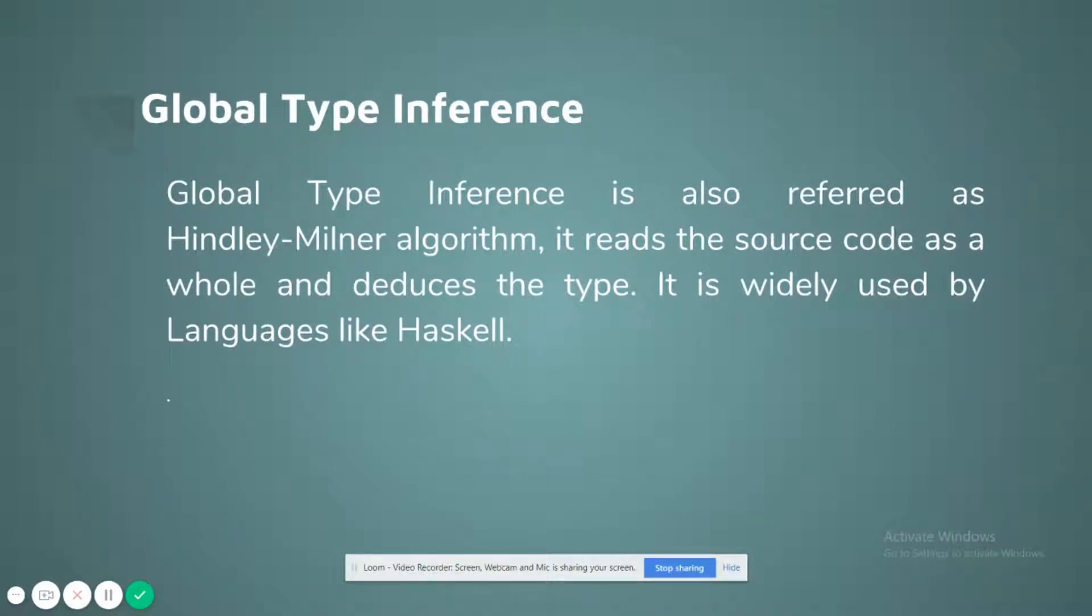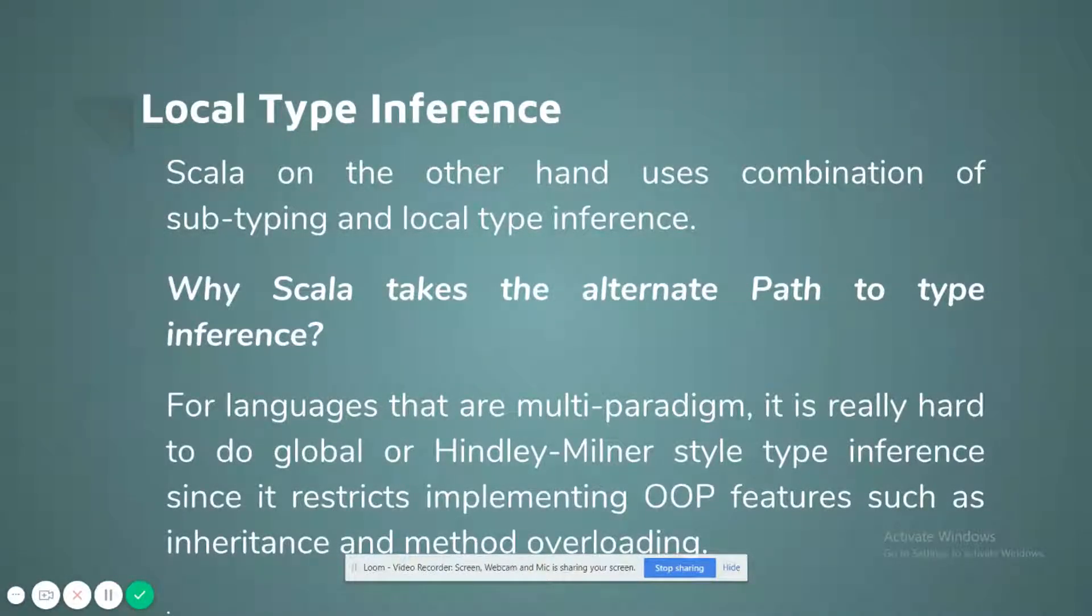In global type inference, often an algorithm called the Hindley-Milner is used to deduce the types. The Hindley-Milner algorithm is also called global type inference. In this algorithm, it reads the source code as a whole and deduces the type. Local type inference: Scala's type system works in a little different manner than global type inference. Scala deduces the types using local type inference. Scala follows a combination of subtyping and local type inference.